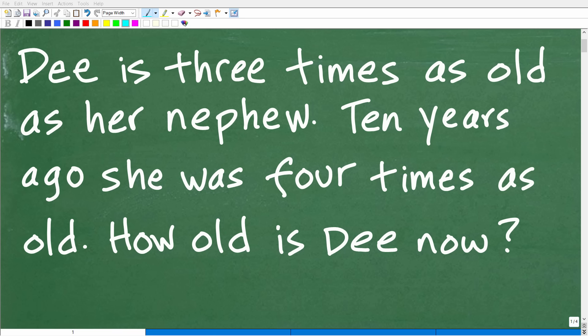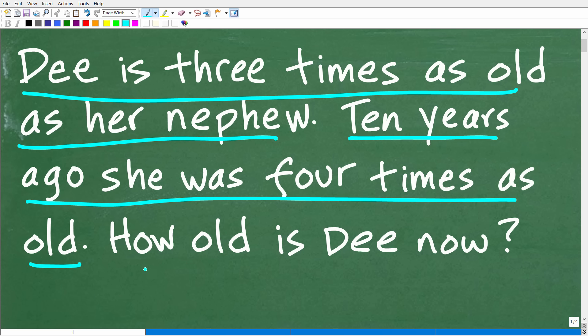Okay, so get ready to put your math skills to work to solve this interesting little math word problem. Matter of fact, let me go ahead and read the problem. It is the following: Dee is three times as old as her nephew. Ten years ago, she was four times as old. How old is Dee now?